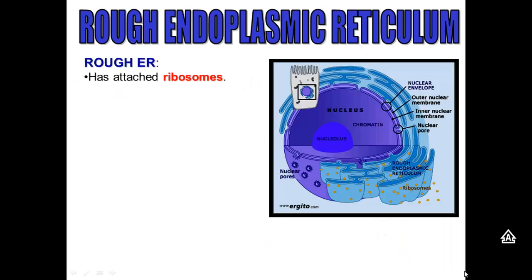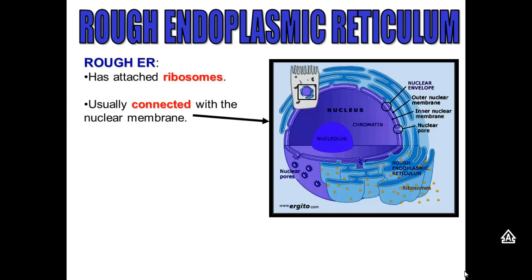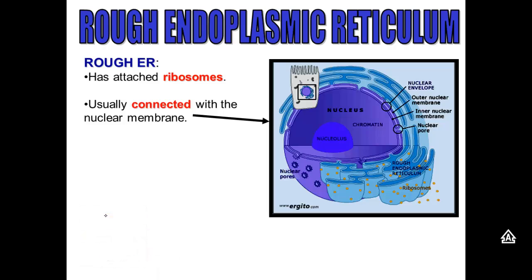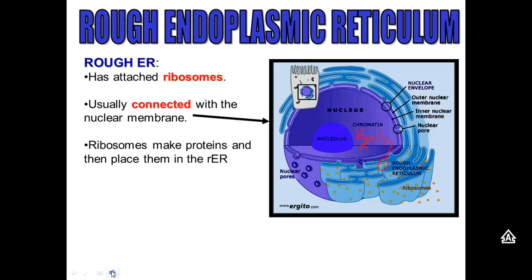Let's talk about the rough ER first. The rough ER is very distinct because it has ribosomes attached to it, little dots all over it, and it's also usually attached to the nuclear membrane — they're physically connected. Ribosomes make the proteins, as we discussed in the earlier screencast, and then place them inside the rough ER. The rough ER will then modify some of those proteins and will send them off to the Golgi body within a vesicle.